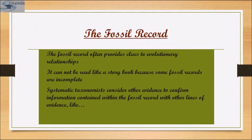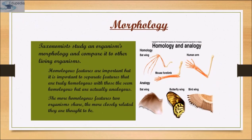The fossil record often provides clues to evolutionary relationships, but it cannot be read like a storybook because some fossil records are incomplete. Systematic taxonomists consider other evidences to confirm information in the fossil record. Taxonomists also study an organism's morphology and compare it with other living organisms. Homologous features are important, but it is important to separate features that are truly homologous from those that are analogous. For example, bat wing and human arm are homologous, while bat wing, butterfly wing and bird wing appear similar but are actually analogous.